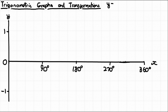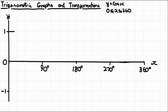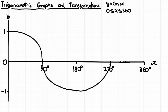Now let's do the cos graph: y = cos(x), in the interval 0 to 360 degrees. It starts at 1 at 0 degrees, goes down to 0 at 90 degrees, down to -1 at 180 degrees, back up to 0 at 270 degrees, and back up to 1 at 360 degrees.